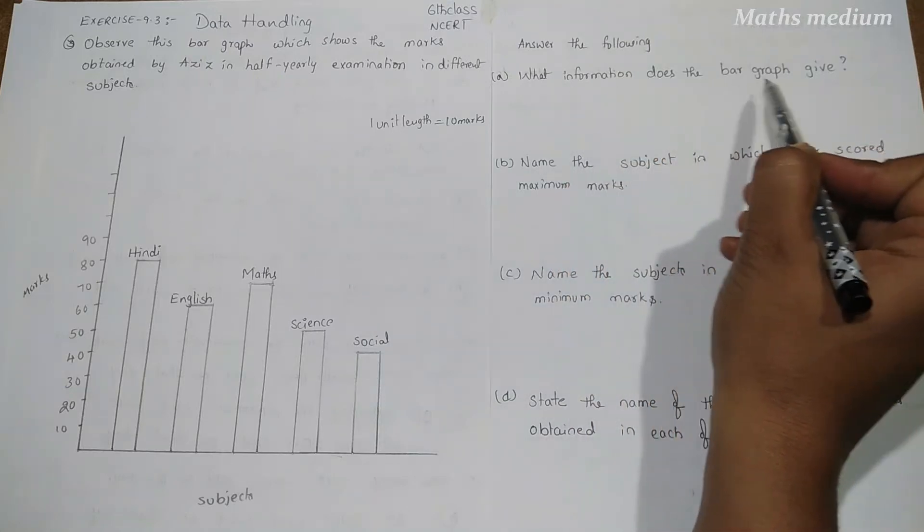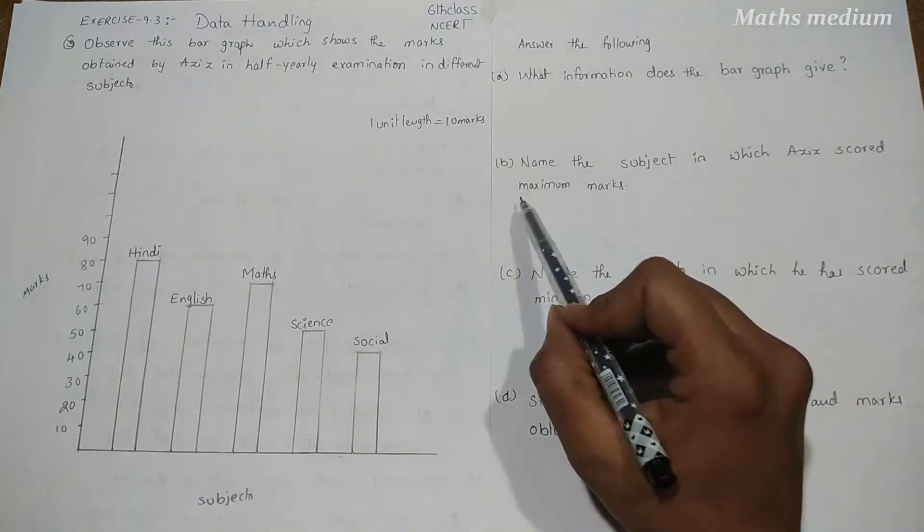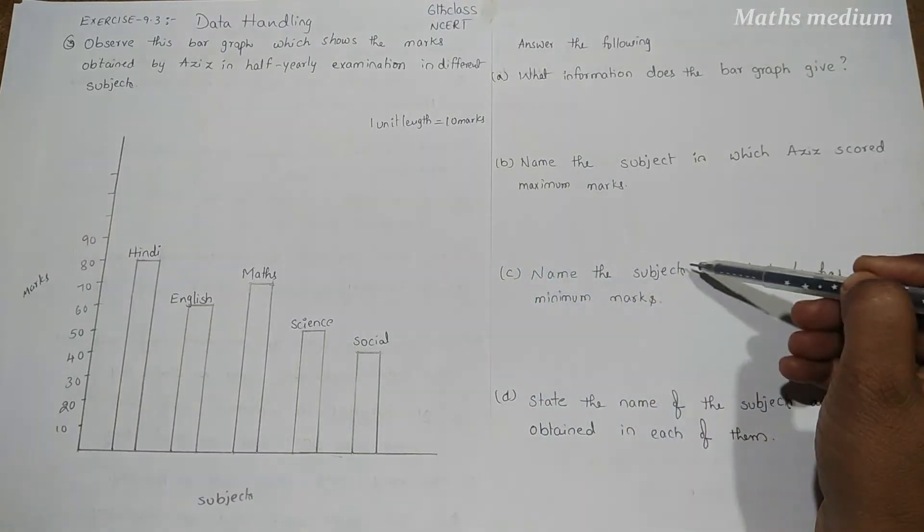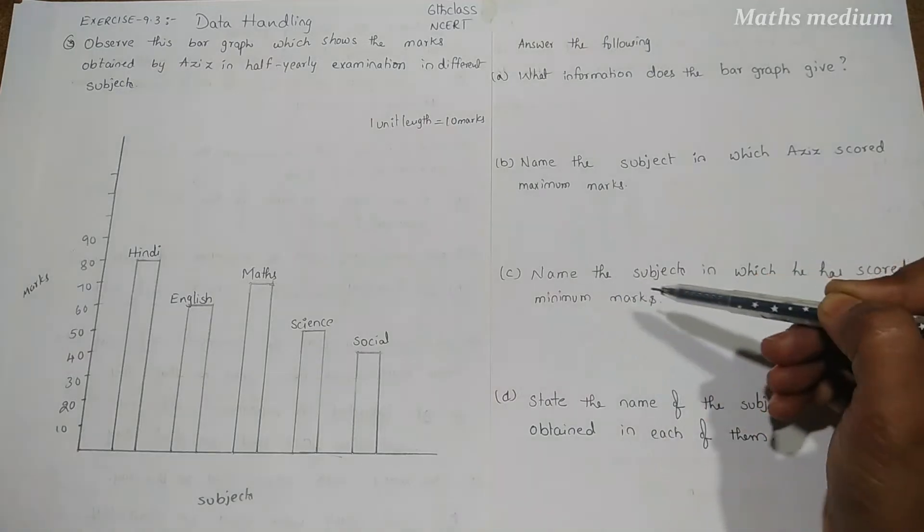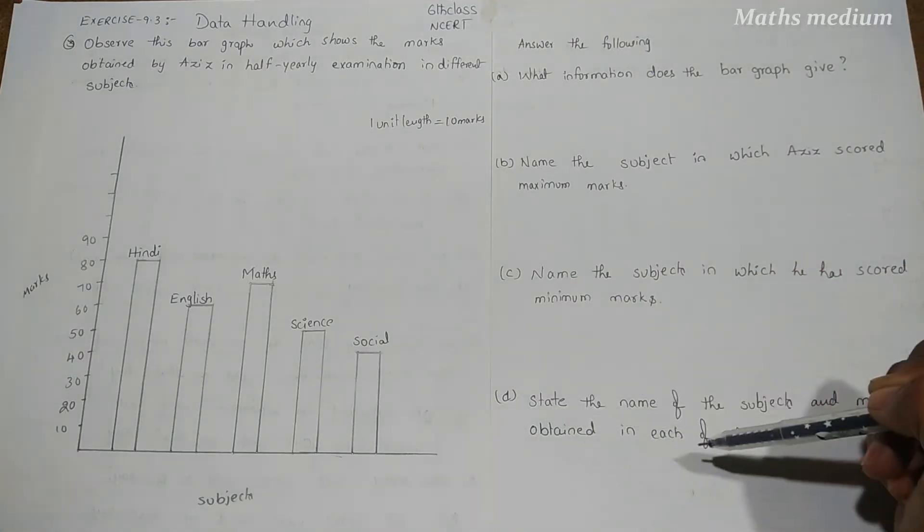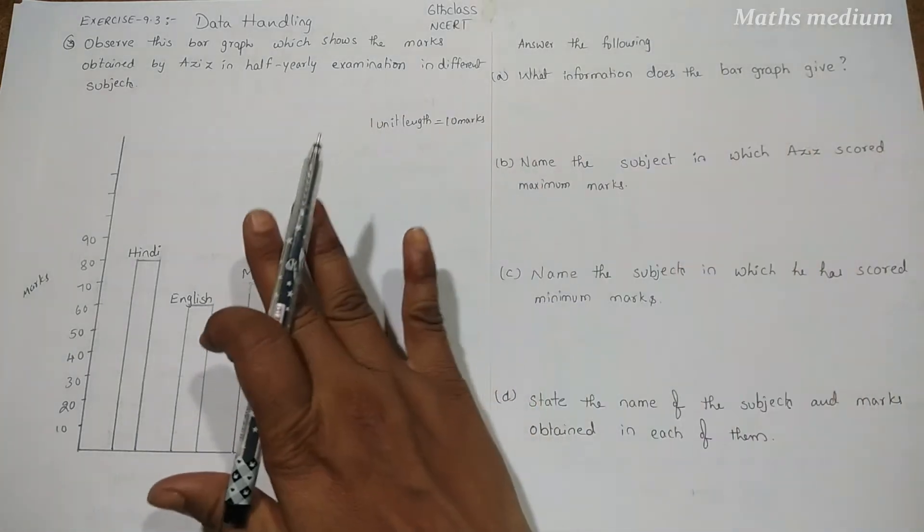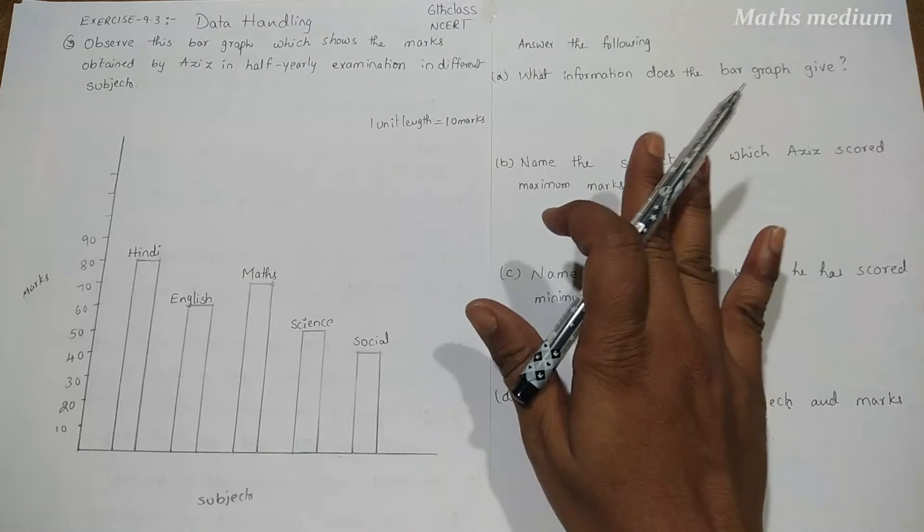What information does the bar graph give? Name the subject in which Aziz scored maximum marks. Name the subjects in which he has scored minimum marks. State the name of the subjects and marks obtained in each of them. These are the questions related to the given bar graph. We have to answer these questions.